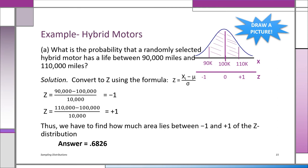Always draw the picture. For part A, we convert 90,000 and 110,000 to Z scores. Z for 90,000 is 90,000 minus 100,000 over 10,000, which is negative 1. Z for 110,000 is 110,000 minus 100,000 over 10,000, which is positive 1. We need the area between minus 1 and plus 1 on the Z distribution. The area on the right side is 0.3413 and the left side is 0.3413 by symmetry, giving an answer of 0.6826.